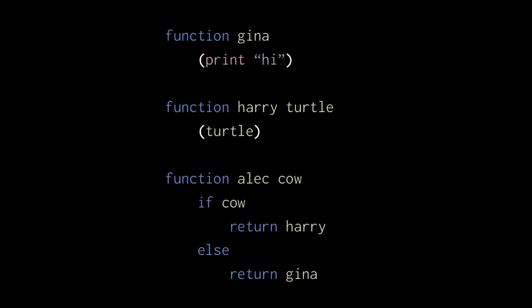It's also possible to return a function from another function. Here we have a function alloc with one parameter cow, and depending upon whether cow is true or not, the function returns either the function harry or the function gina.